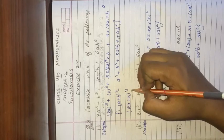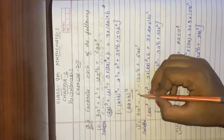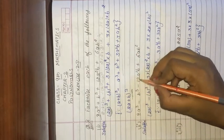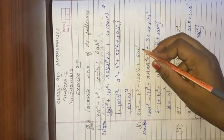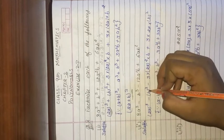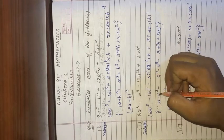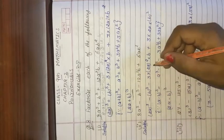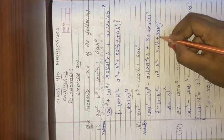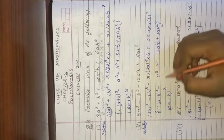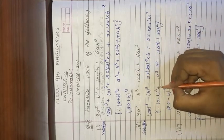Second part: 8a³ - b³ - 12a²b + 6ab². We will make the (a - b)³ formula. The expanded form is a³ - b³ - 3a²b + 3ab². This is the expanded form. We have to convert it.